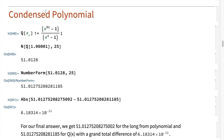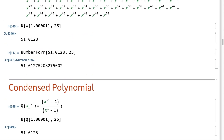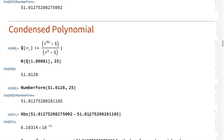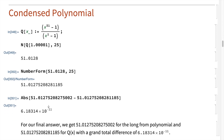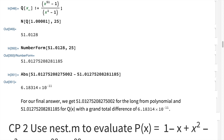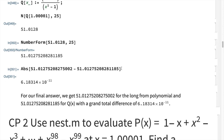Next, for the condensed polynomial — same concept — only this time we're given the condensed form. I declared a variable q of x with the given expression, evaluated it at x equals 1.00001 with additional accuracy out to 25 digits. Then I subtracted the long-form value from the condensed polynomial value and took the absolute value. The final answer: both give 51.01275... with a total difference of 6.18314 times 10 to the negative 11th power.